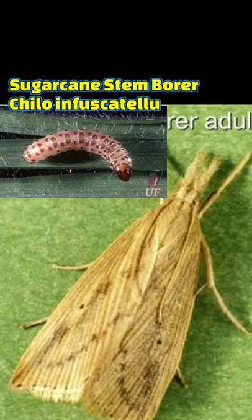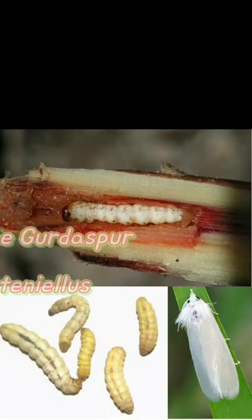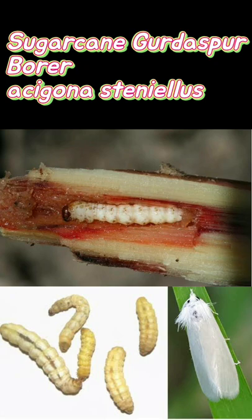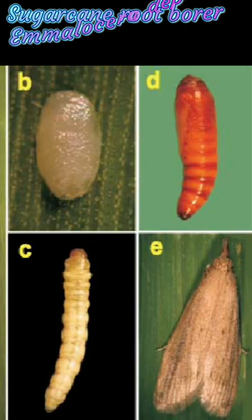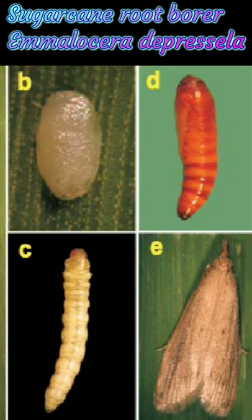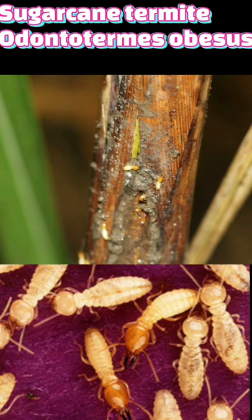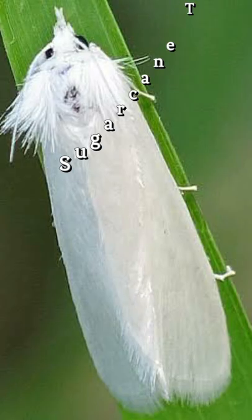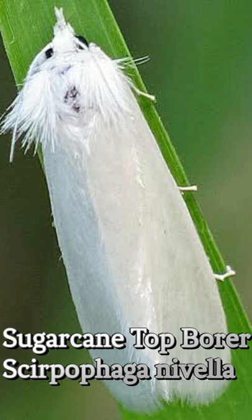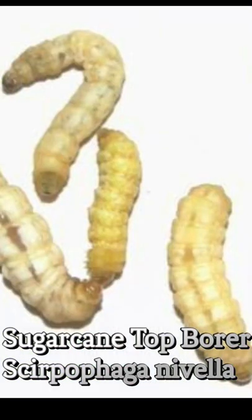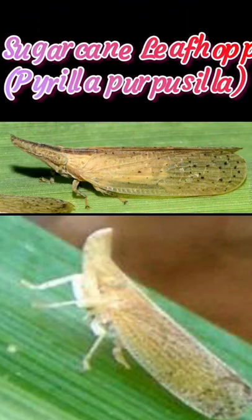Insect pests of sugarcane: the sugarcane stem borer Chilo infuscatellus, the sugarcane borer Acigona stramineella, the sugarcane root borer Emmalocera depressella, sugarcane termites Odontotermes obesus, the sugarcane top borer Scirpophaga nivella, and the sugarcane leaf hopper Pyrilla perpusilla — this is its technical name.